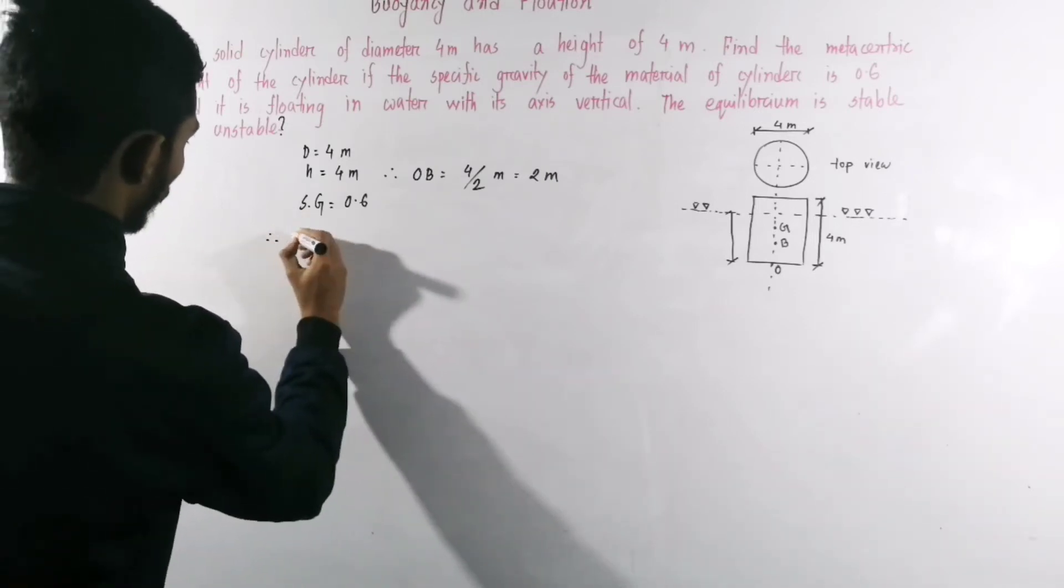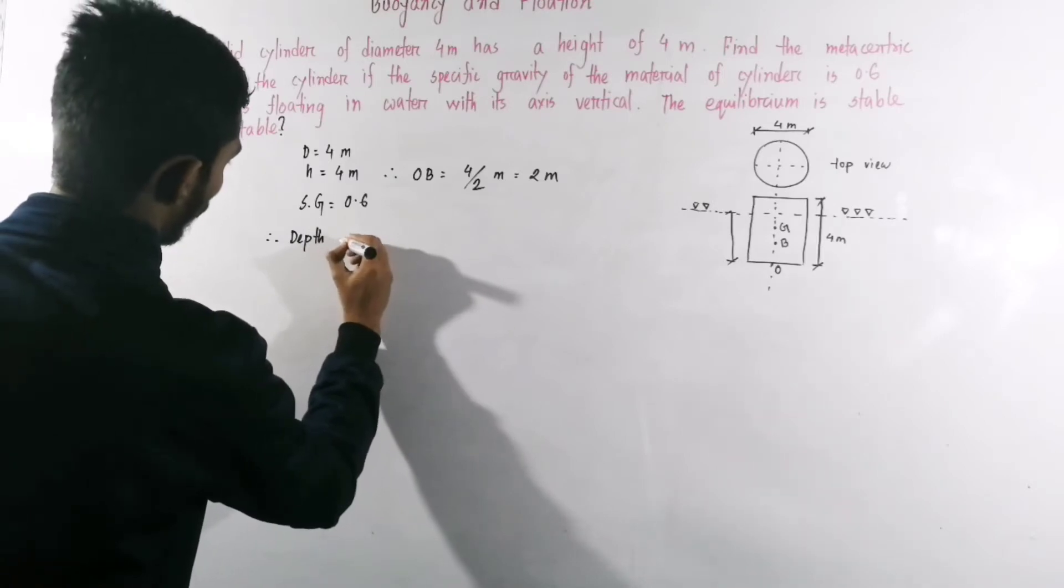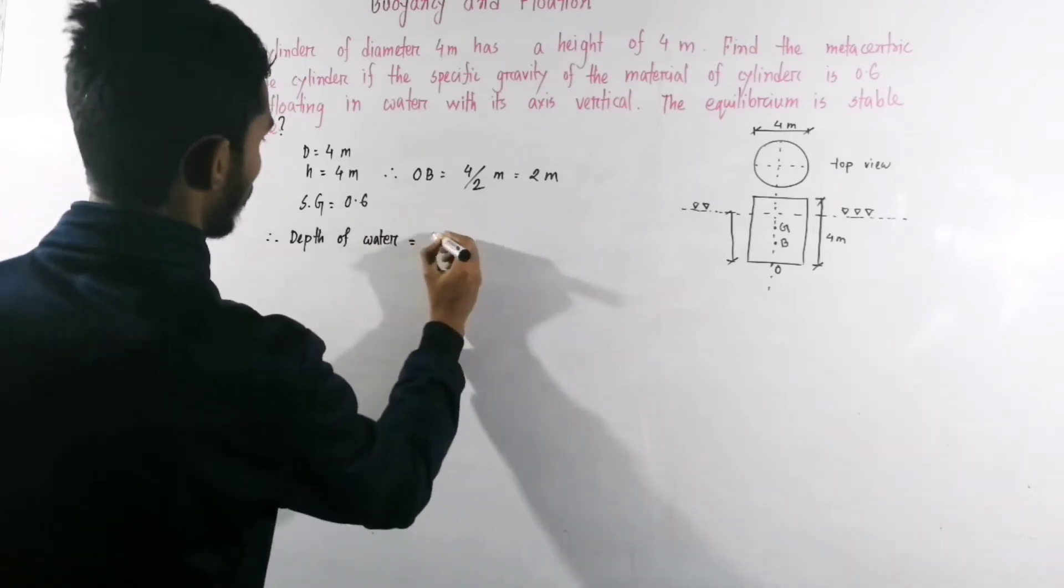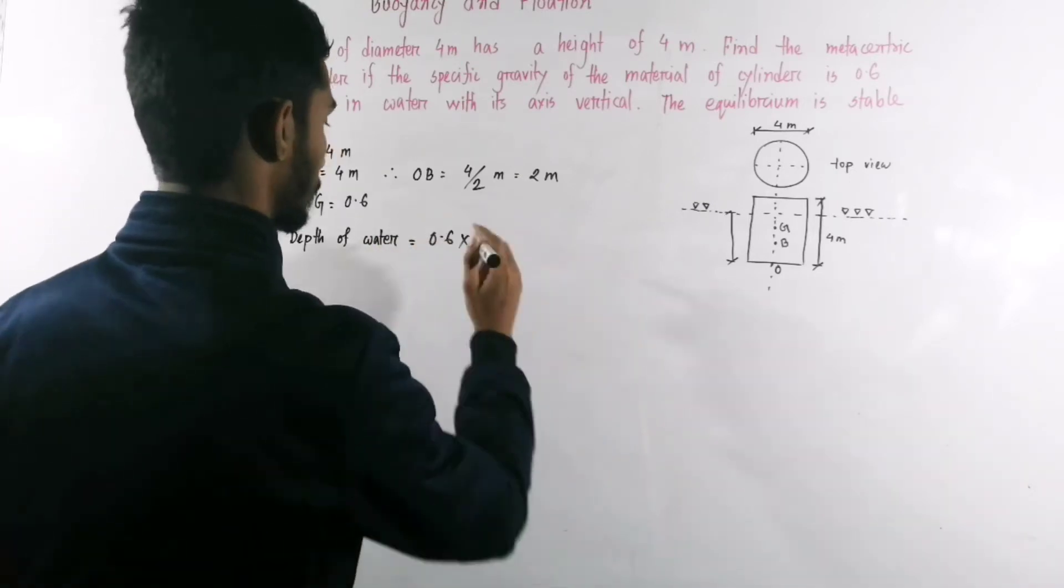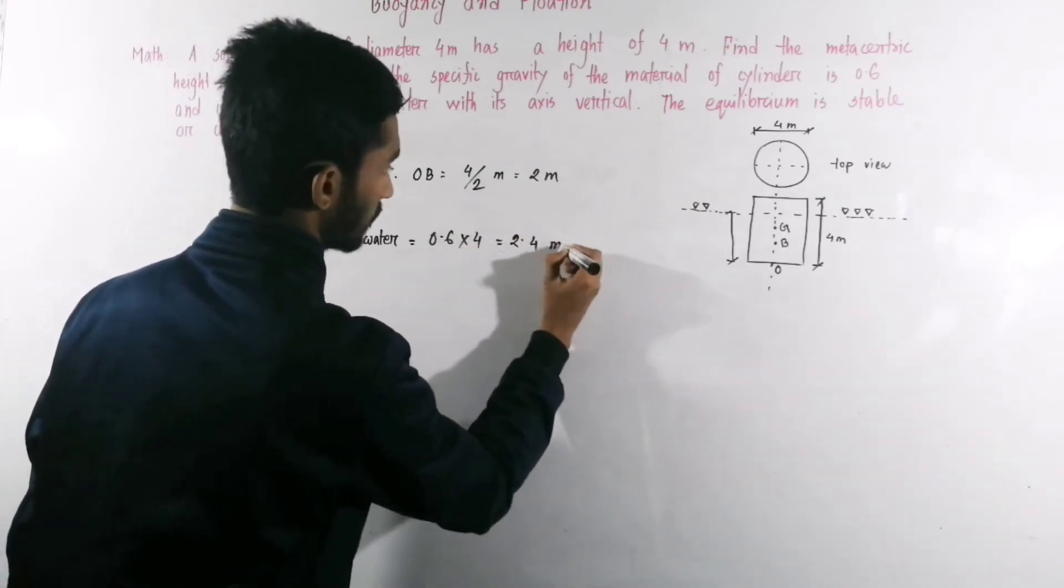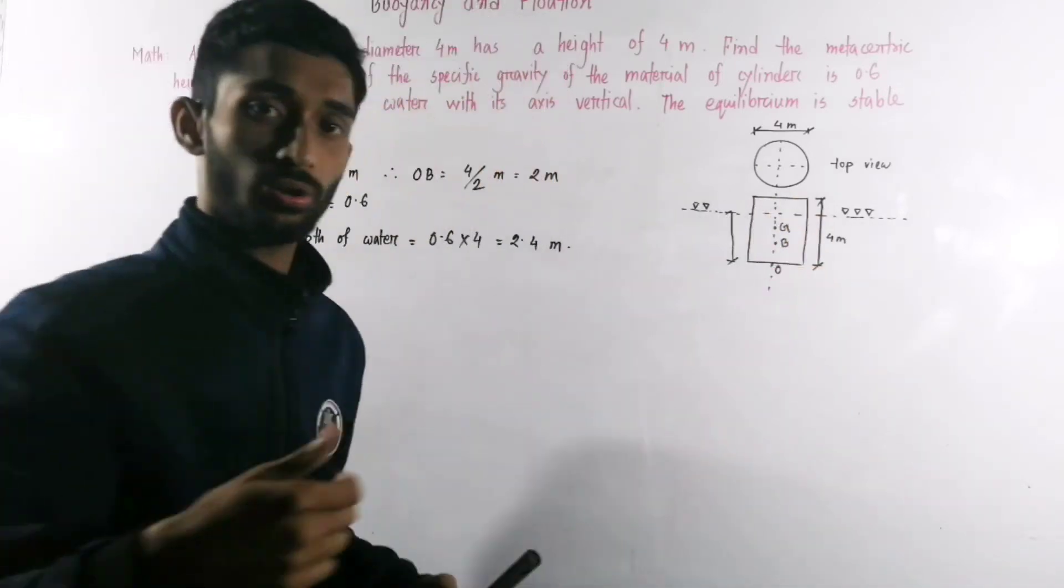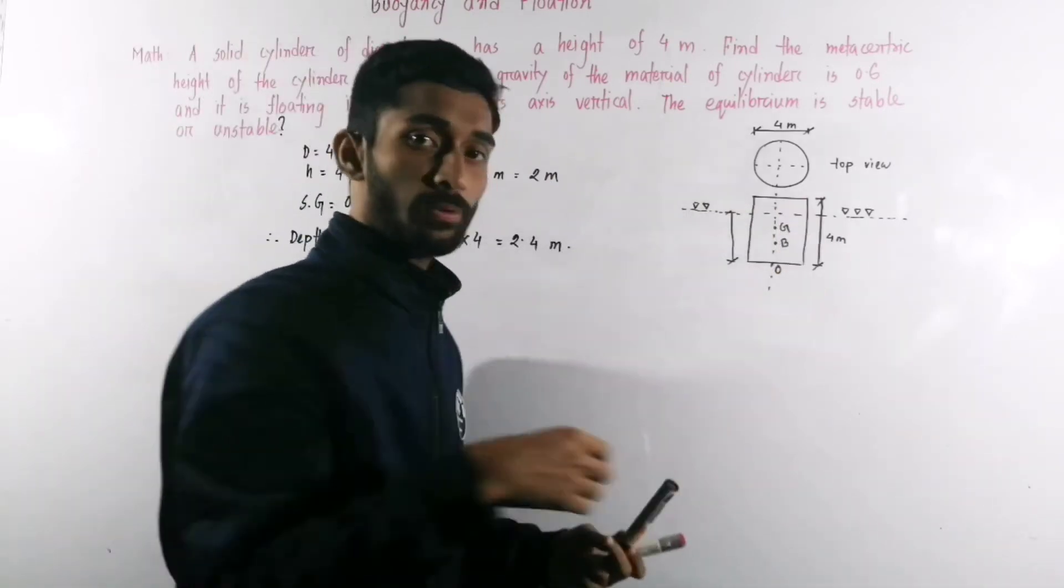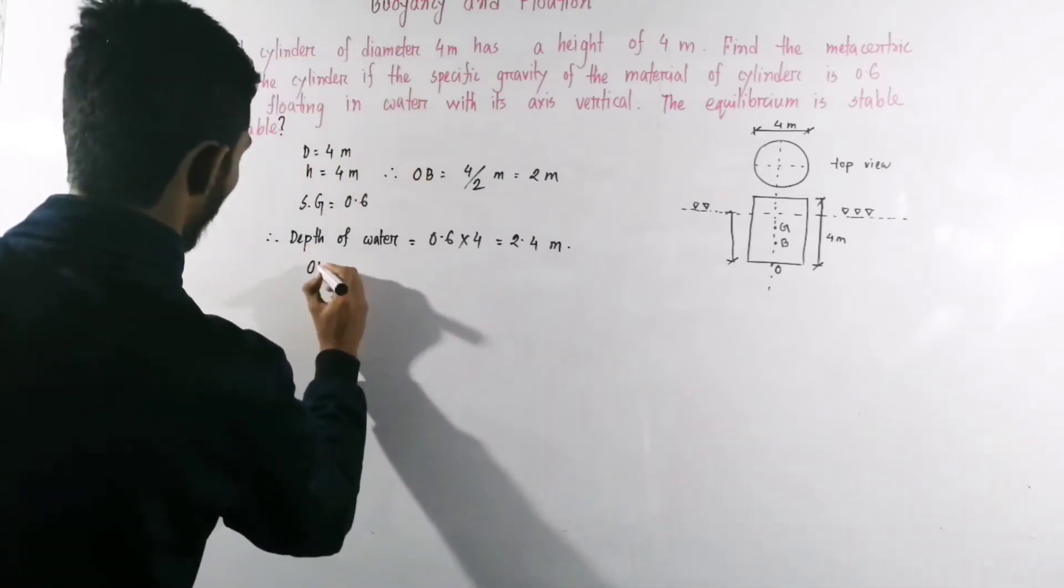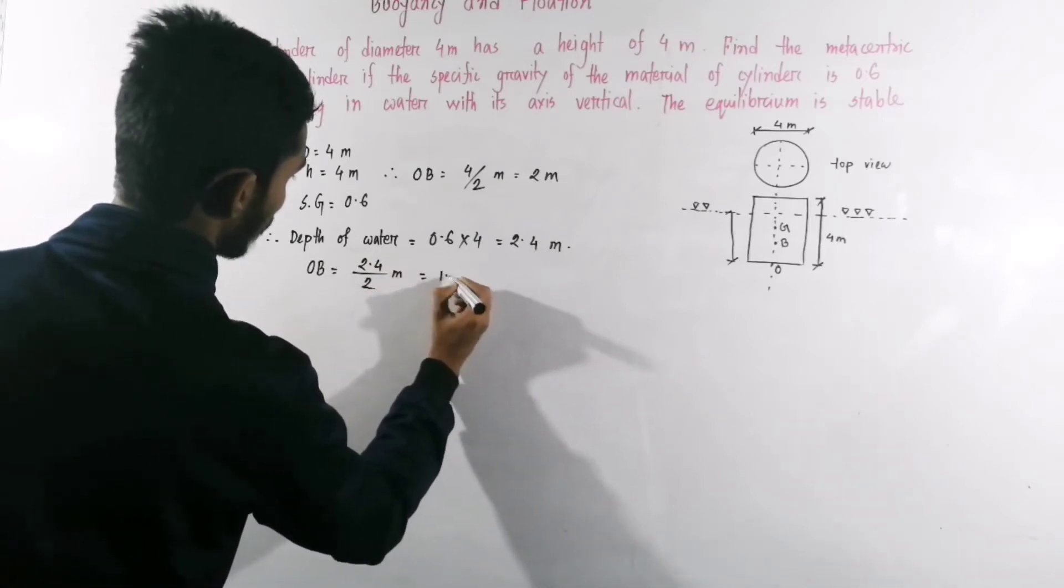Depth of water equal to 0.6 times 4 equal to 2.4 meter. Center of gravity, center of buoyancy OB equal to 2.4/2 meter equal to 1.2 meter.